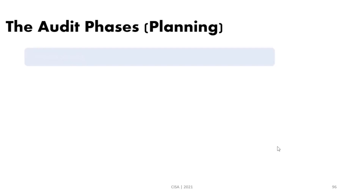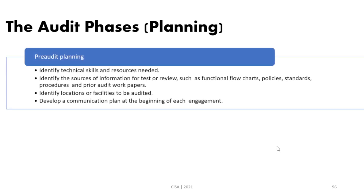After that we move to pre-audit planning. In pre-audit planning we are concerned with many tasks: identifying resources, identifying sources of information, creating and developing procedures, and preparing audit work papers that will be used during the actual audit engagement. We also identify the locations of the facilities we are going to audit. For instance, if auditing a large organization with many locations, we need to know those locations in advance.